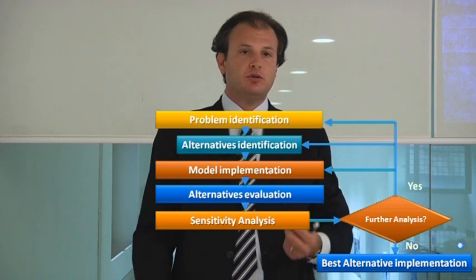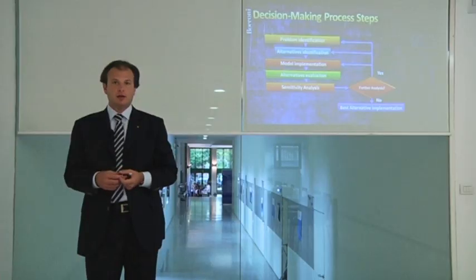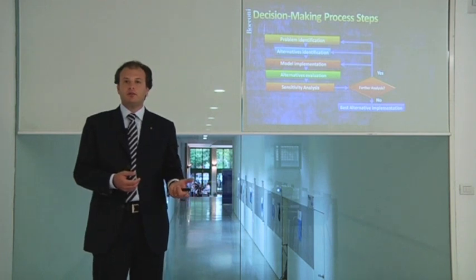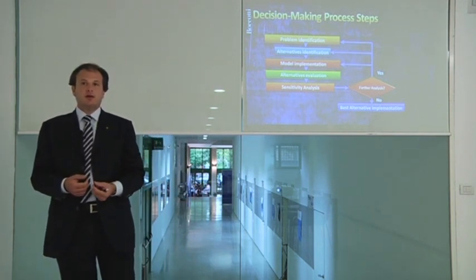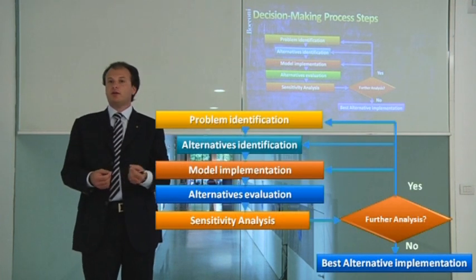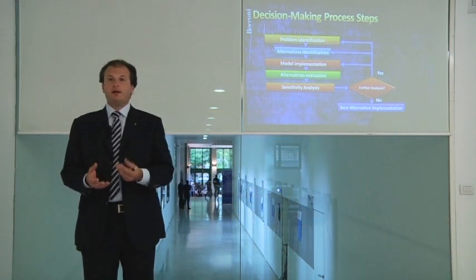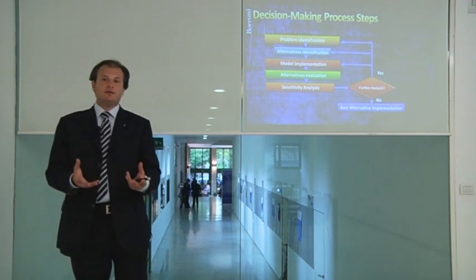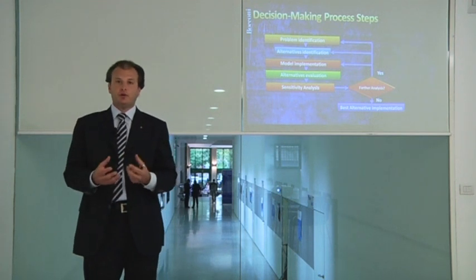Problem identification means you figure out what is the problem you have to decide about. In our simple example, the problem is given by the text: you are the owner of a racing team and your decision is about what to do in the next race. The alternatives are the possible solutions — in this case you can run or withdraw, or perhaps wait to receive new information. You have to identify all possible alternatives.